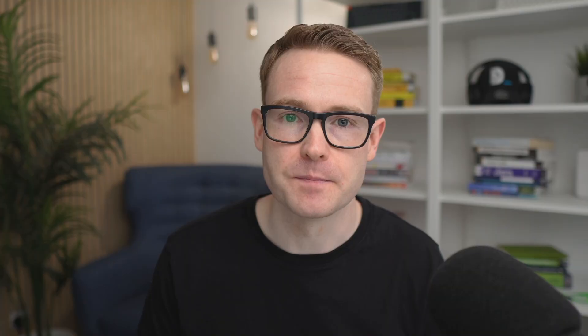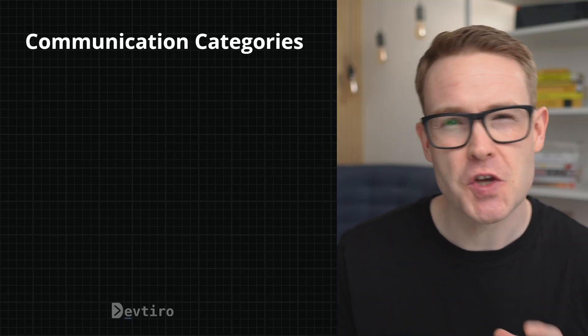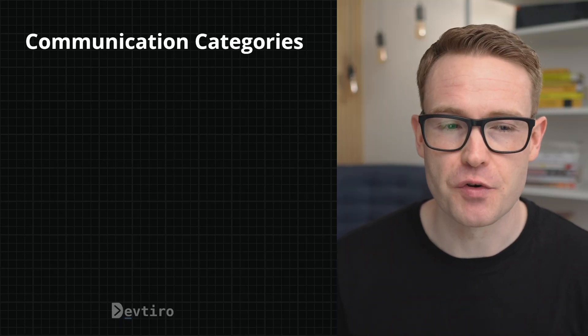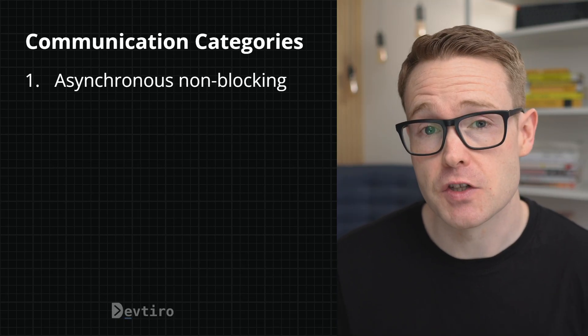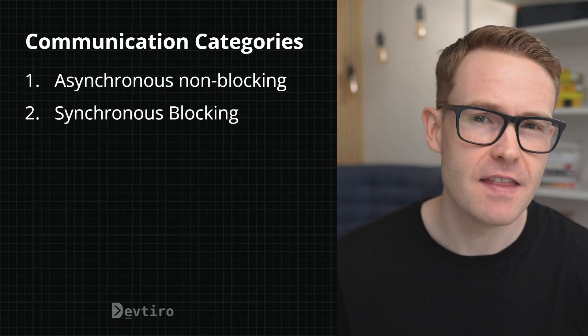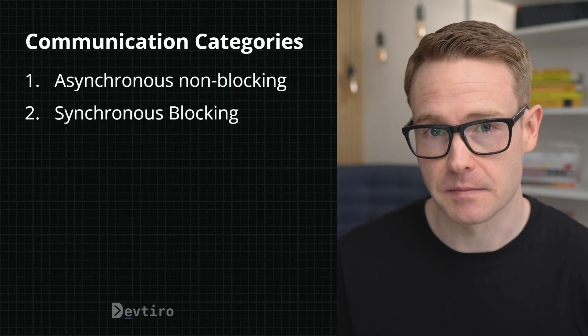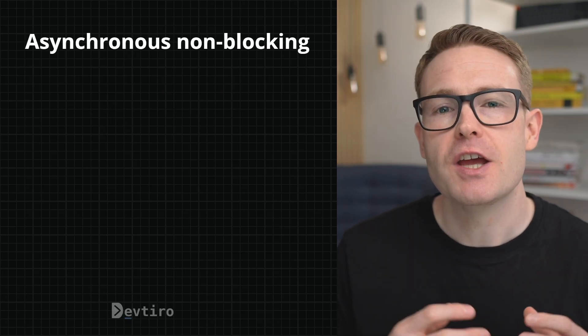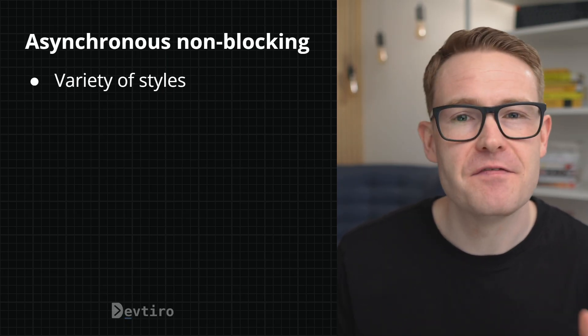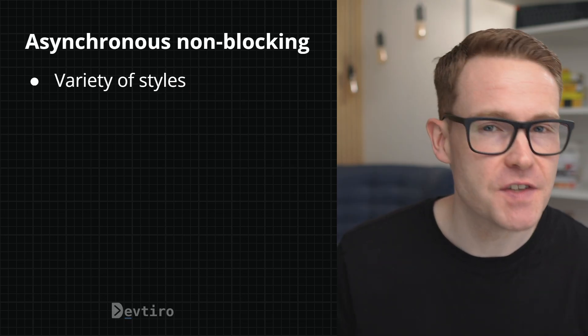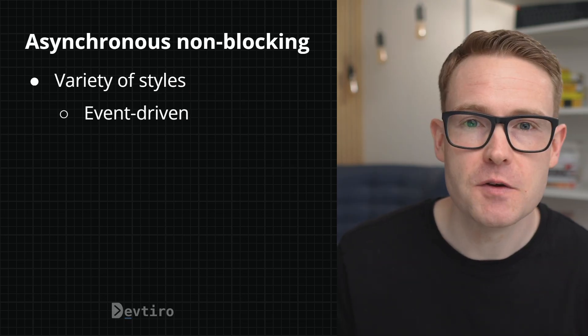In a microservices architecture, you typically have several microservices that can communicate with each other in some way. We can divide that communication into two major categories: first, asynchronous non-blocking, and then synchronous blocking.